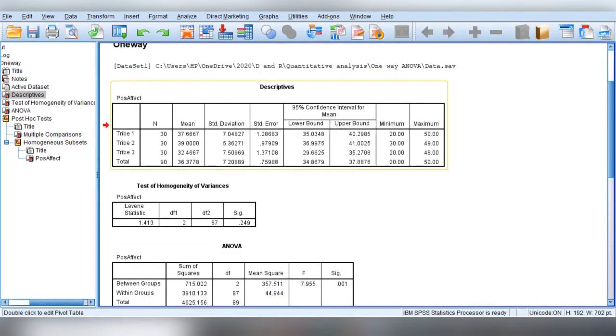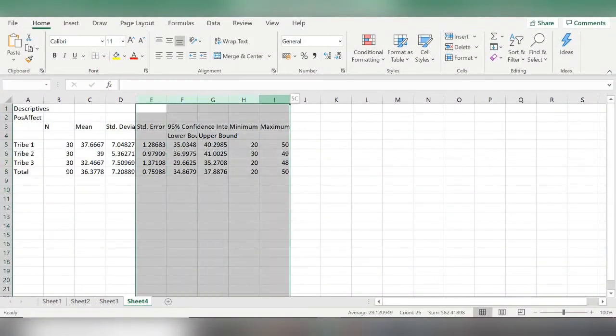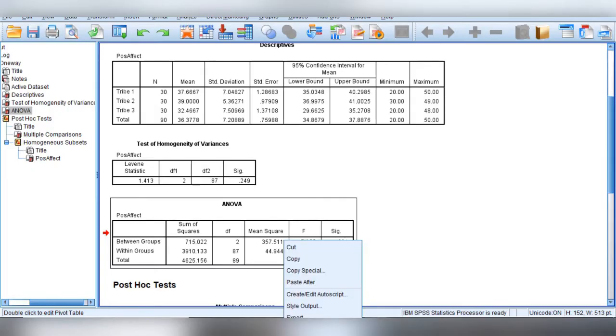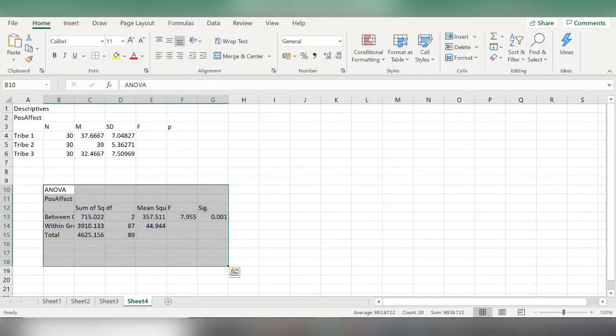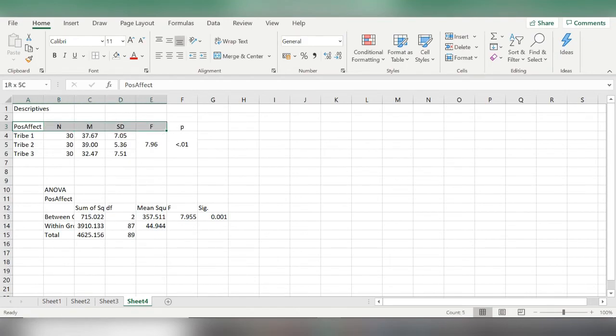Going back to SPSS output, this is the table on descriptives. I am copying descriptives from here, pasting it in the excel sheet, removing the information which I do not want to show in the table. Making some modifications, adding columns for F and p. Copying ANOVA table from the output view, pasting it in the excel sheet, adding the information of F and its significance or p. Making necessary modifications and copying it.